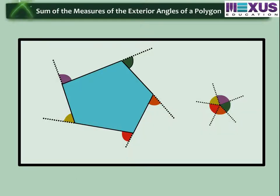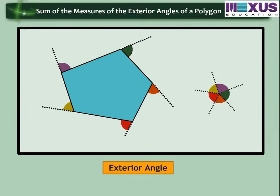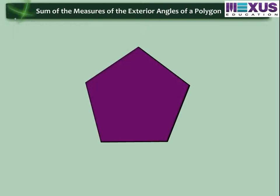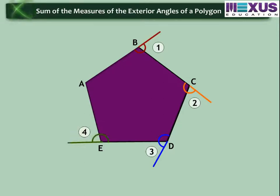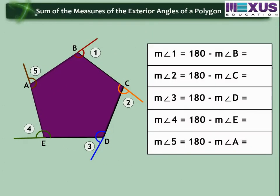Now, as we are familiar with the interior angles of a polygon, let us learn about the exterior angles of a polygon and its sum. Draw a pentagon ABCDE. Mark the exterior angles as angle 1, angle 2, angle 3, angle 4 and angle 5. If you know the interior angles of the polygons, we can find its exterior by subtracting it from 180. As you can see here, it forms a linear pair. Therefore, measure angle 1 is equal to 180 minus measure angle B.